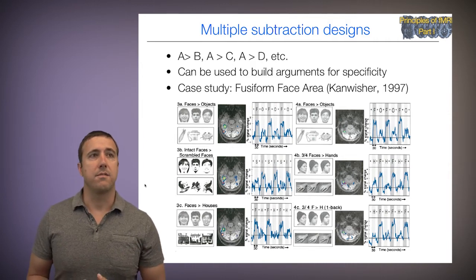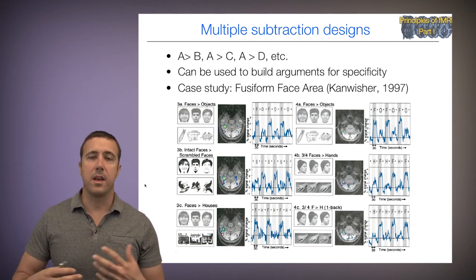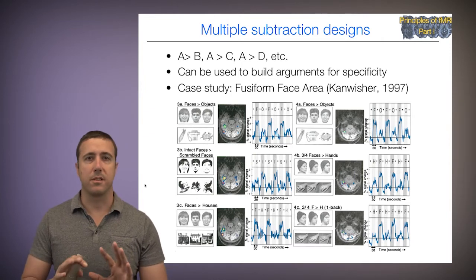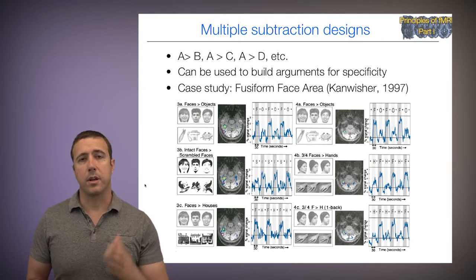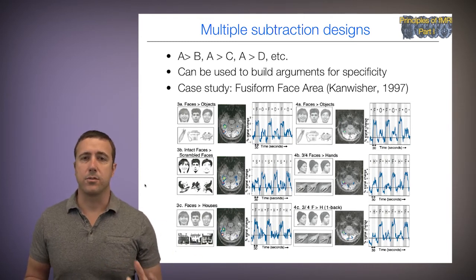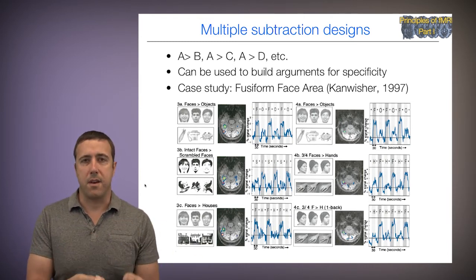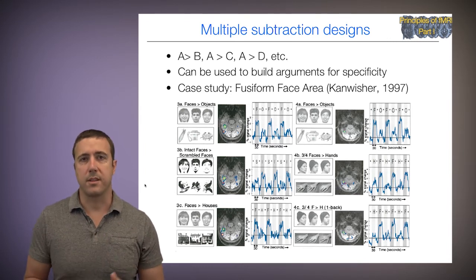They also compare faces with houses, faces with hands — so maybe it's about body parts, they can control for body parts — faces with animal faces, faces with pictures of faces, drawings of faces, and other conditions. So really, across these multiple subtractions, they are trying to triangulate on the idea that the FFA is activated when you see a face, but not when you do other things.